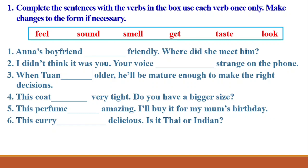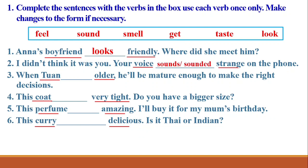Anna's boyfriend — we cannot choose 'taste' or 'smell' for this one. We can only choose 'looks.' Number two: since it's a voice, we need to hear a sound — we choose 'sounds.' Number three: Tuấn becomes older — we choose 'get.' Number four is 'feel' — you feel the coat is very tight. Number five is 'smell' — perfume must be smelled, not tasted. And the last one is 'taste' — curry and delicious.